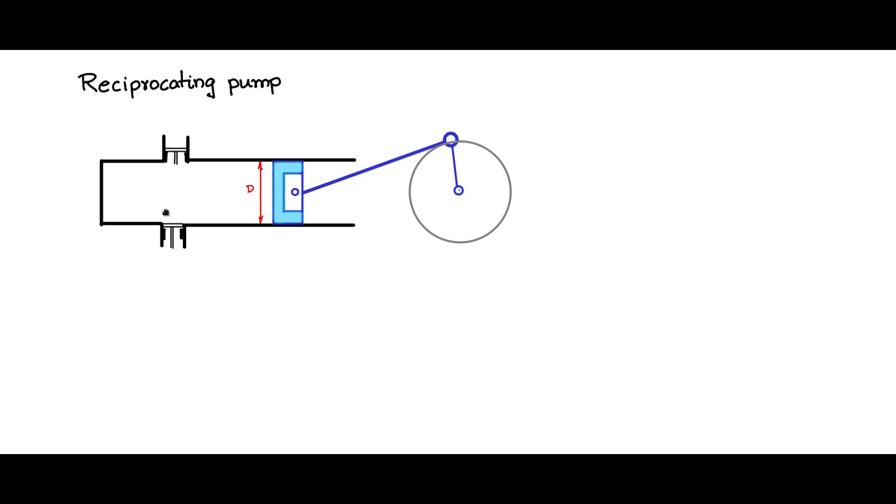The valve can lift and allow water to come in. Likewise, here the valve can lift and allow water to go out. But the pressure of the water on the pipe will see that the water does not come back into the chamber.